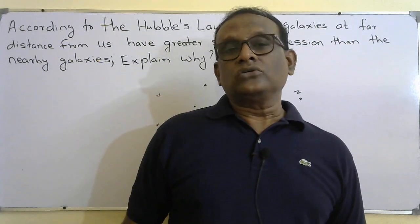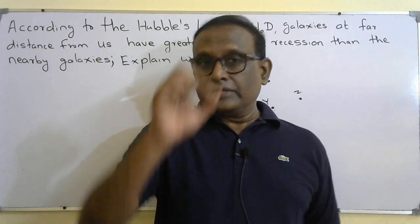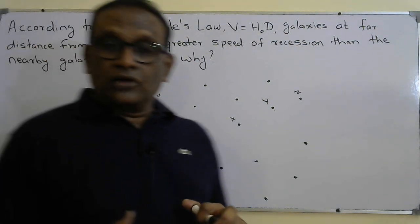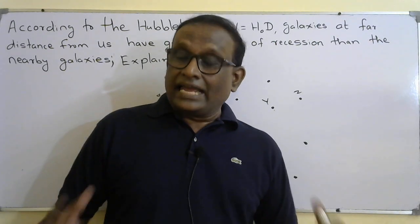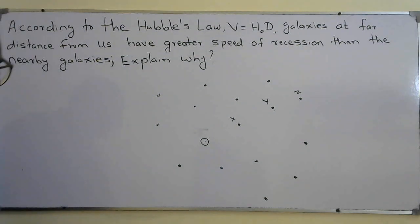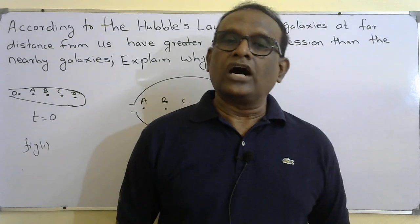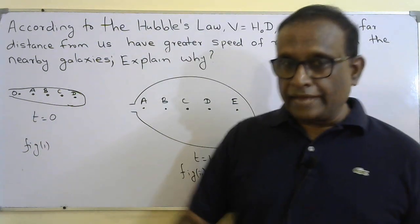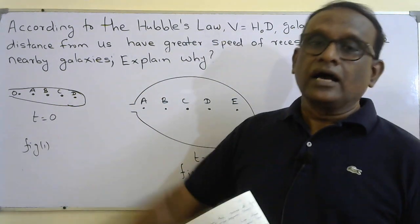It is easy to explain this with an analogy like an inflated balloon with dots. The balloon analogy makes it easy to understand why the speed of recession of galaxies appears to increase with distance, and how the fabric of universe expands and the distance between galaxies changes.